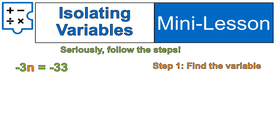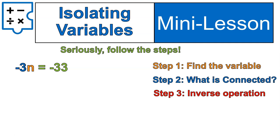Our variable is the letter n. We are asking what's connected to it. It's negative 3. And in this case, it's times negative 3. We're going to do the inverse of that, or in other words, divide by negative 3.